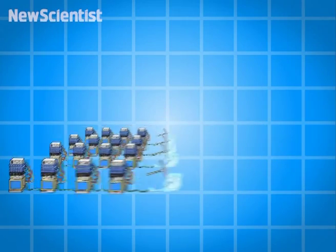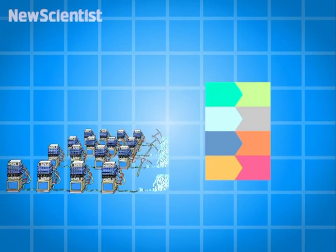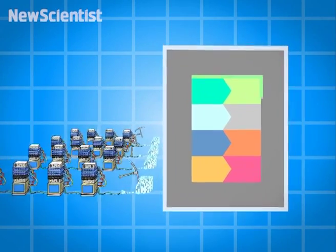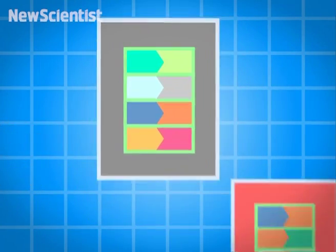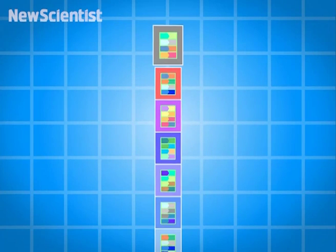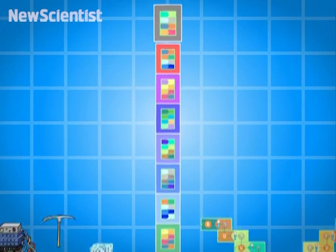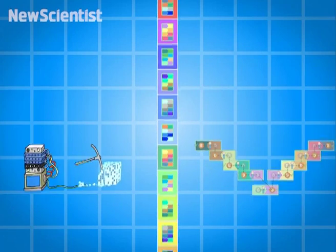All those mining computers collect recent Bitcoin transactions into what are called blocks. Miners compete with each other to verify the transactions in a block, and then add it to the great chain of all the blocks that came before. This chain is what allows computers to check that a person isn't trying to spend the same Bitcoin twice.